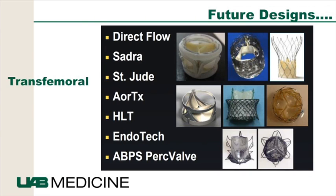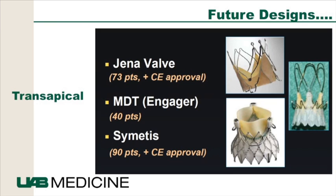Future directions include several new valve designs being studied: the Direct Flow valve, the SATA valve, the St. Jude Portico valve, and Endotech valves — all percutaneously placed with different characteristics, some designed to better prevent paravalvular leaks and some to go through smaller access sheaths. In the transapical realm, there's the Jena valve, the MDT Engager valve, and the Cementis. The SIDRA valve is currently undergoing clinical trials and we should have results in the next year or two.